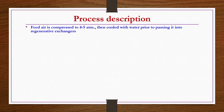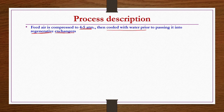Now we see the process description, which we will also see in the flow sheet. The feed air is compressed to 4 to 5 atmospheres. After compressing, it is cooled with water prior to passing it into regenerative exchangers. These regenerative exchangers are very important aspects of the process; up to this exchanger step is where the main difference between one process and another lies.